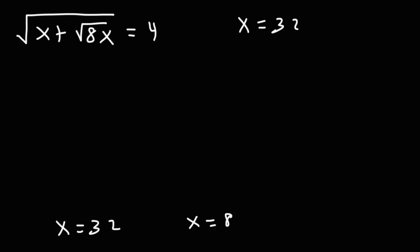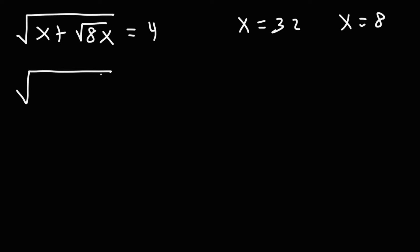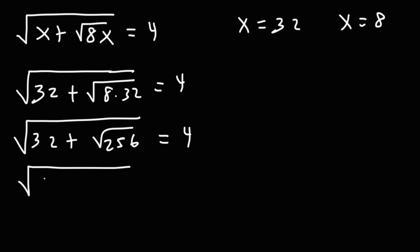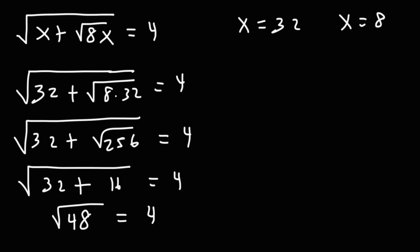We need to check for extraneous solutions. Let's start with x equals 32. Replacing x with 32: 8 times 32 is 256, and the square root of 256 is 16. Then 32 plus 16 is 48, and the square root of 48 is not equal to 4. As a decimal, the square root of 48 is 6.928. So this is an extraneous solution.